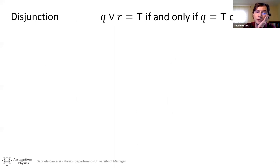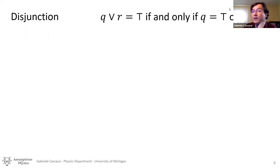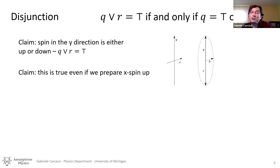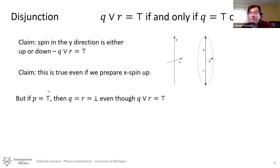Another thing claimed to fail in quantum mechanics is how the disjunction works. In classical logic, Q or R is true if and only if at least one of the two is true. The claim is that in quantum mechanics this does not work. The spin in the y direction is either up or down, so Q or R equals true, and this is always true even if we prepared x spin up. But if we prepare x spin up, then Q and R individually are false, even though Q or R has to be true. So the idea is that quantum disjunction works differently.